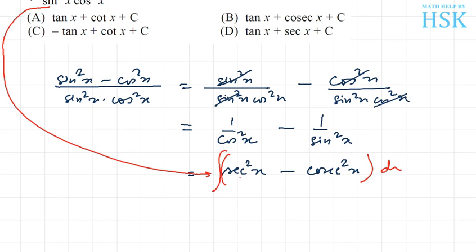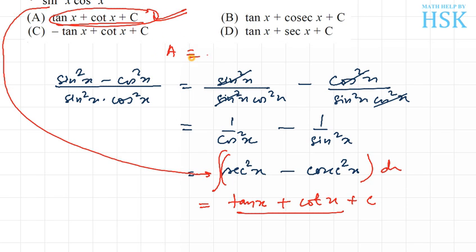Integration of sec²x is tan x, and integration of cosec²x is minus cot x. So minus minus gives plus cot x. The correct answer from the given options is A: tan x + cot x + C, so A is the correct option.